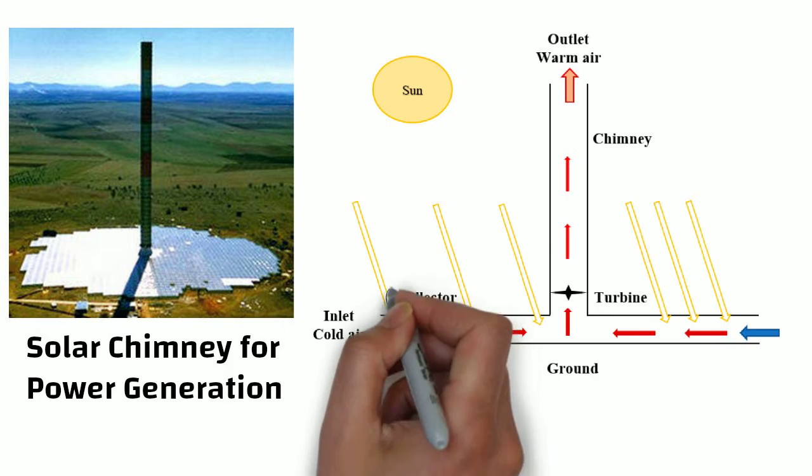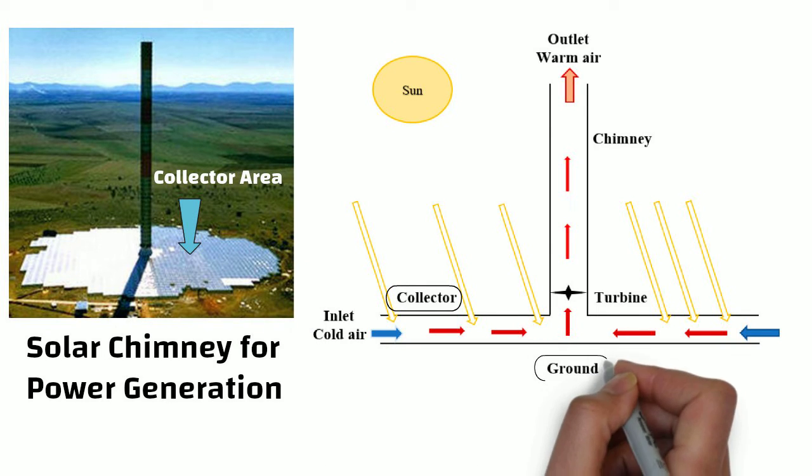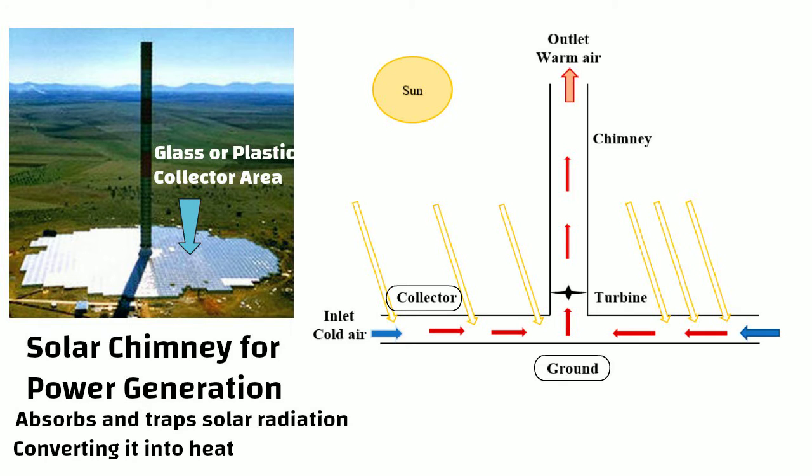In this picture, you can see collector area. It is positioned on the ground. It is made up of a transparent material like glass or plastic. This collector area absorbs and traps solar radiation, converting it into heat.